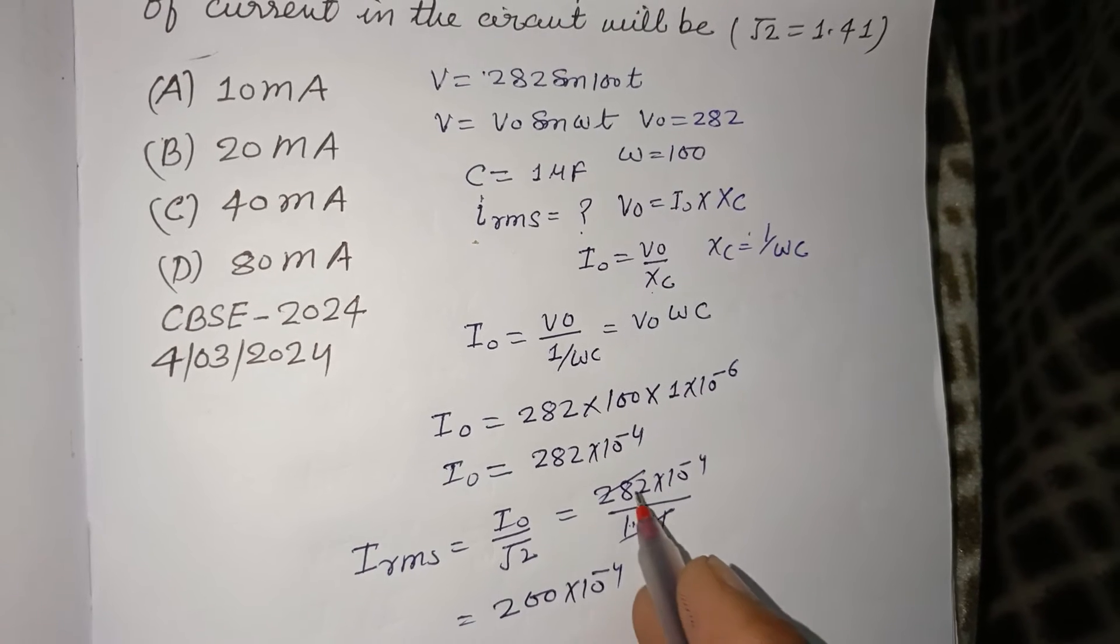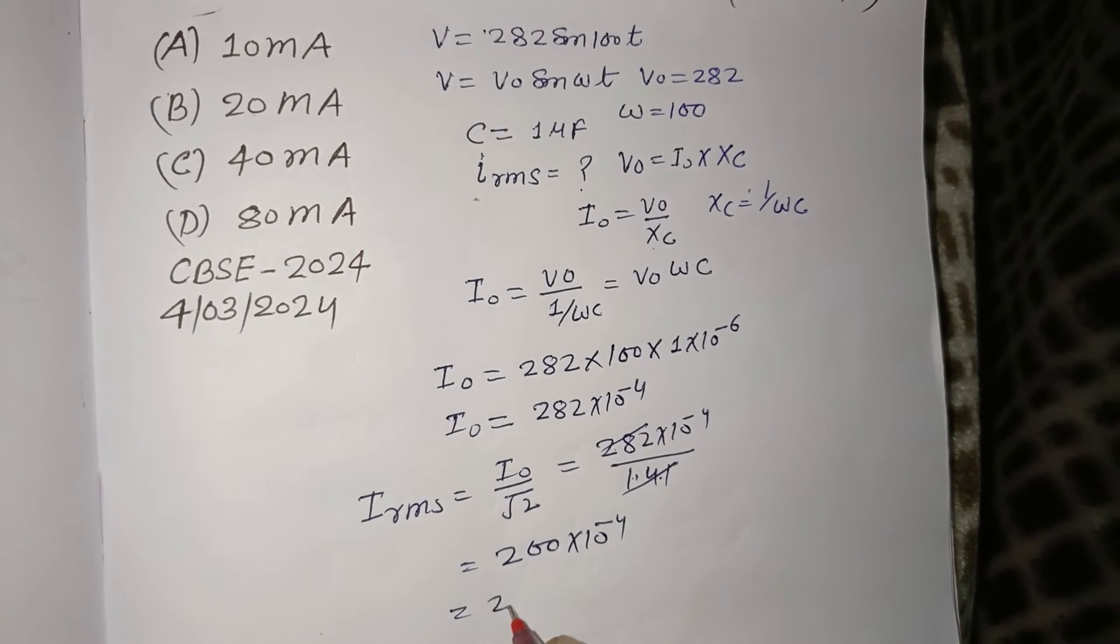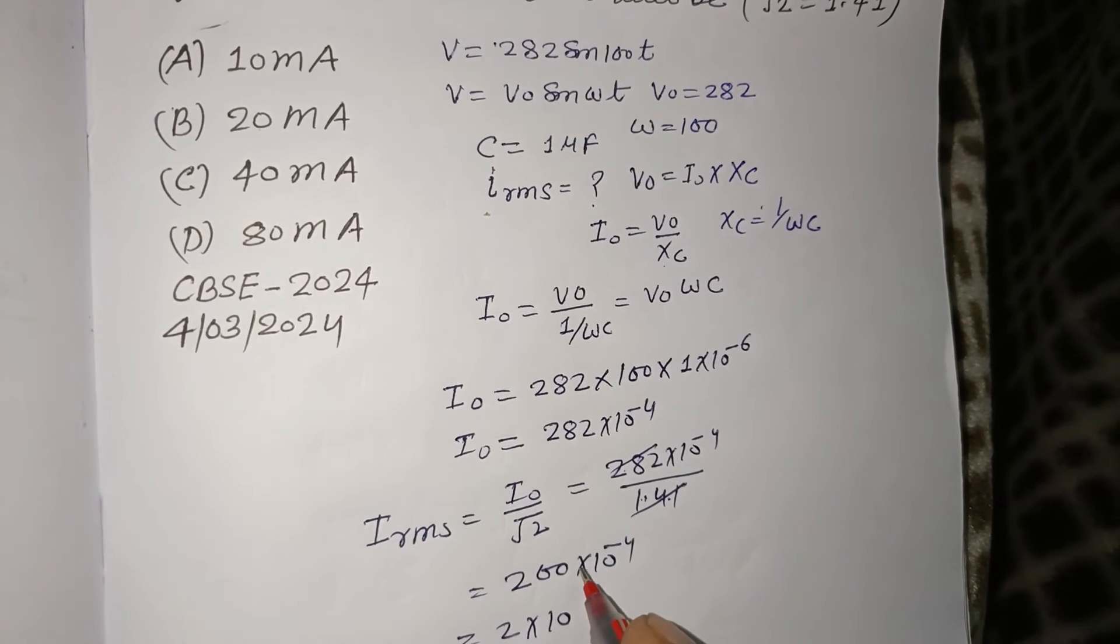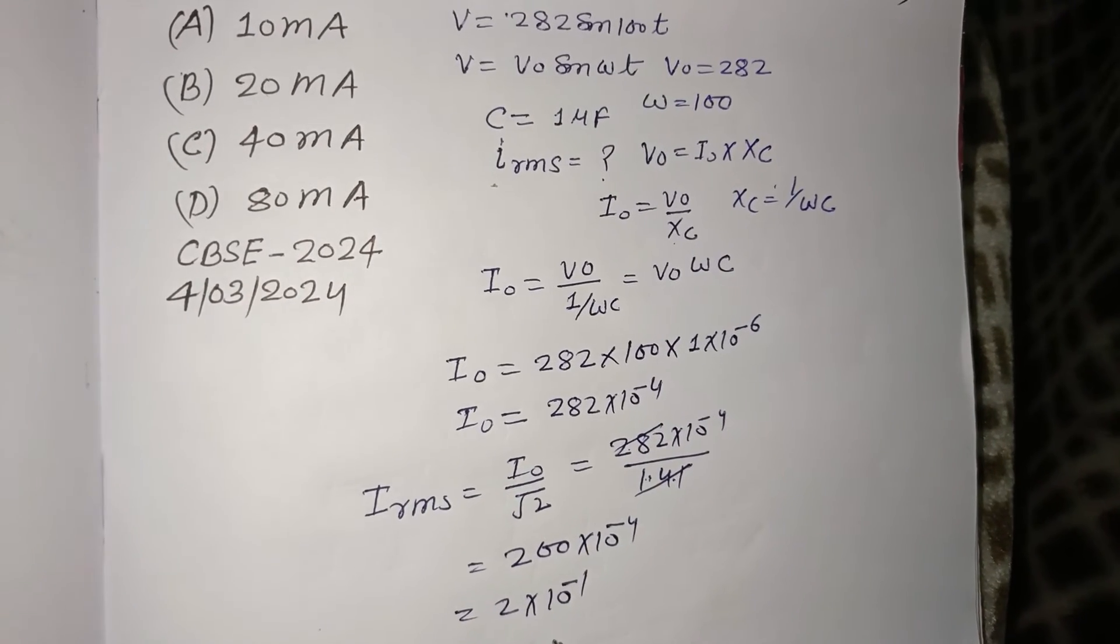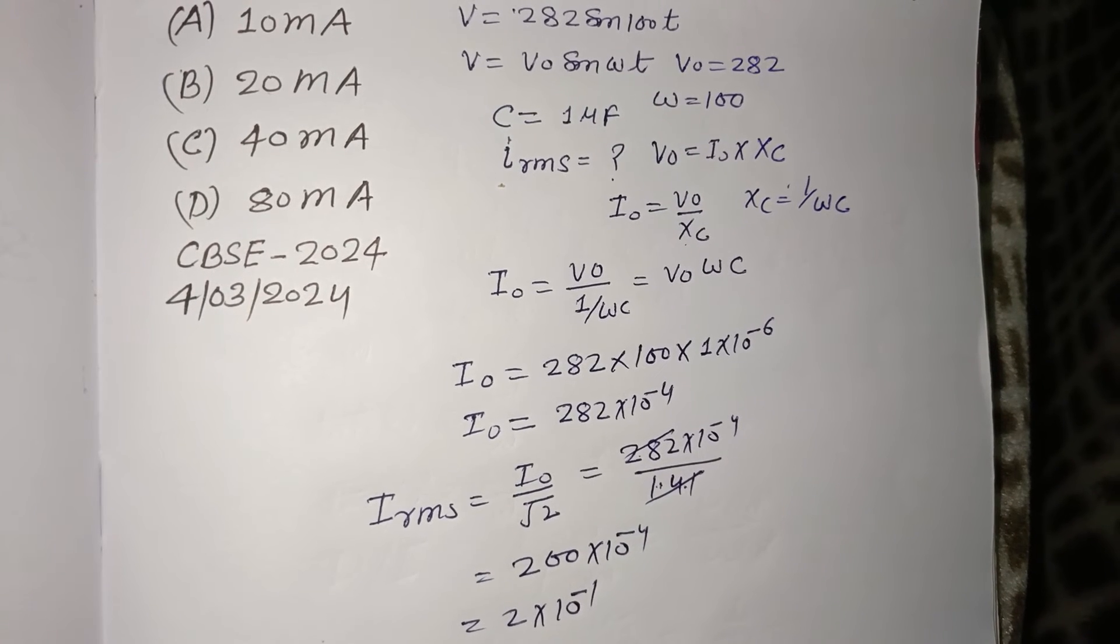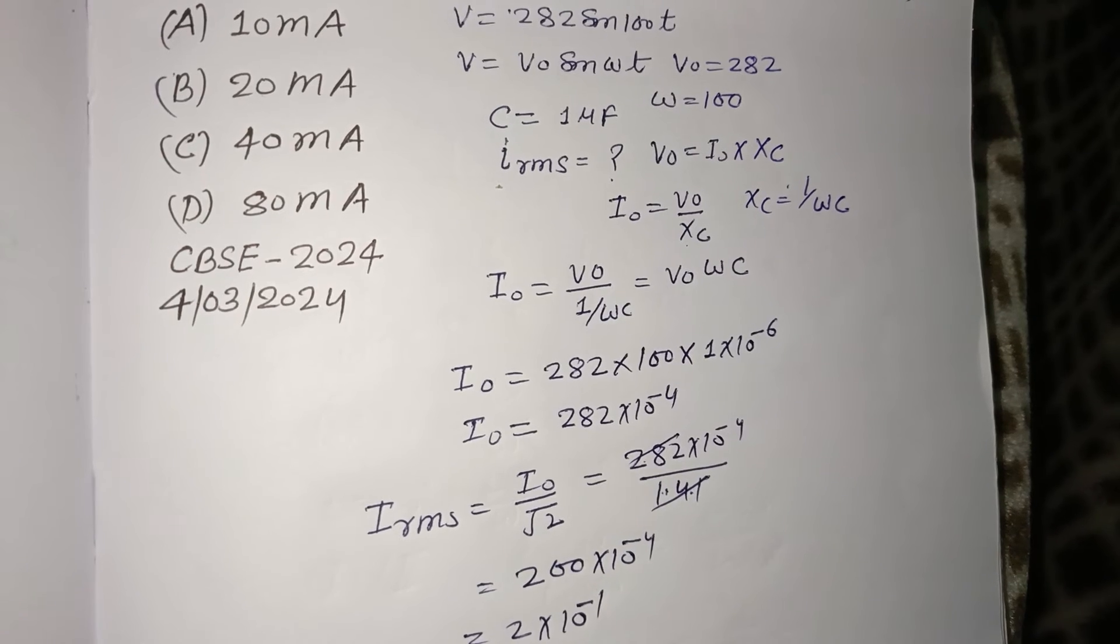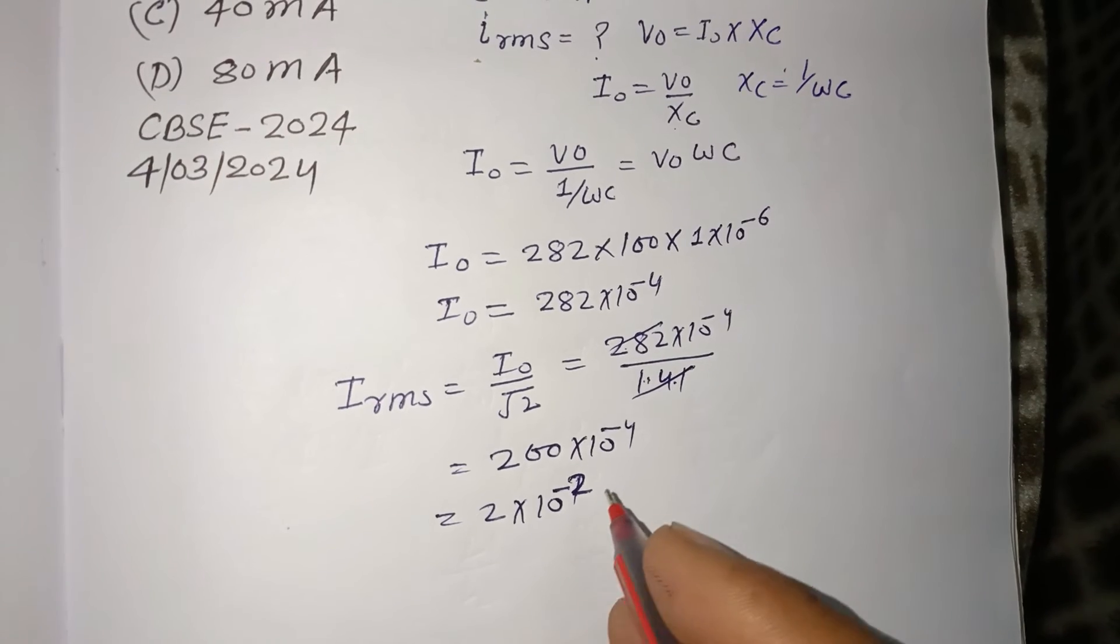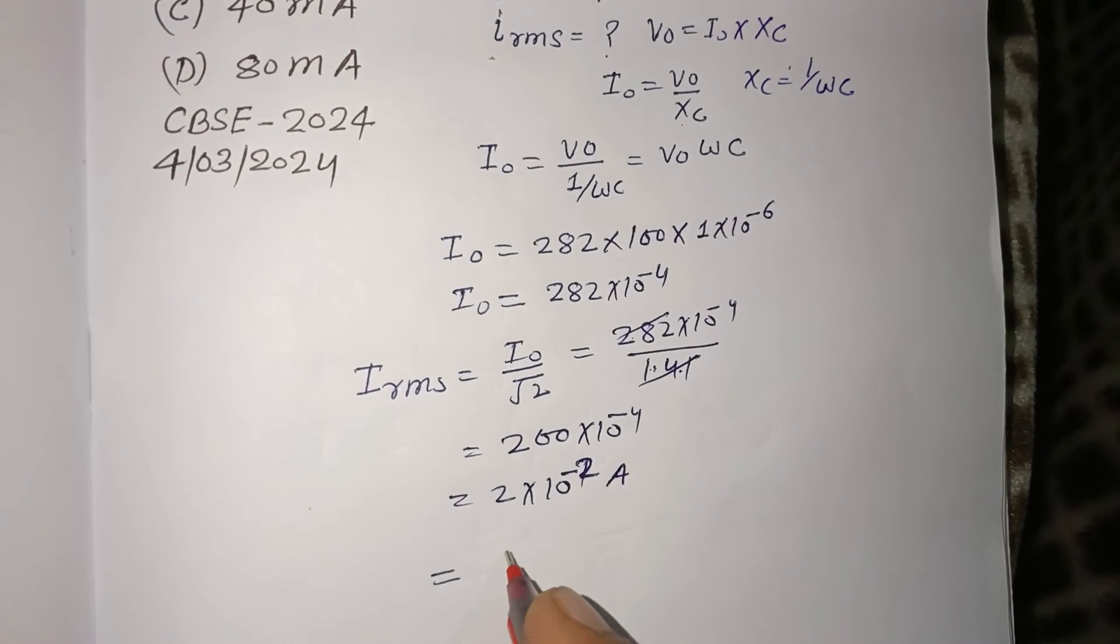Dividing 282 by 1.414 gives us approximately 200. Therefore, this is 200 × 10^-4 = 2 × 10^-2 amperes.